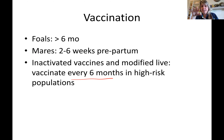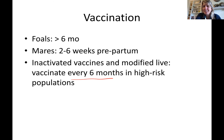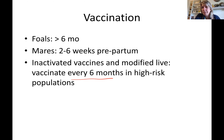Core vaccines are given to every horse regardless of use because those diseases are severe, potentially fatal, and sometimes zoonotic or environmentally acquired through mosquito bites. Risk-based vaccines — including influenza — are determined by the veterinarian based on the individual horse's risk. A horse that stays home as a pasture ornament with no contact with new horses does not need the influenza vaccine.